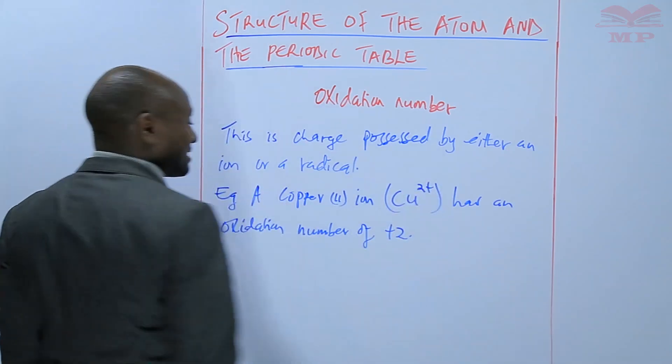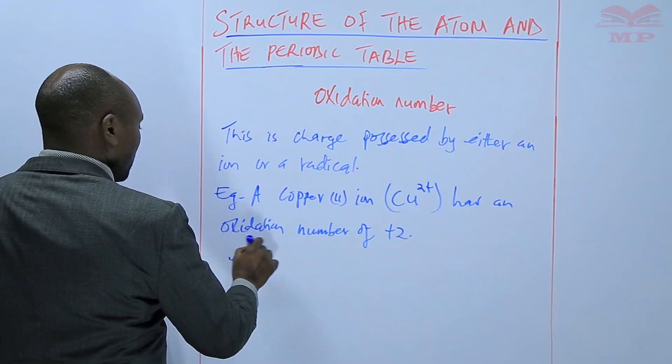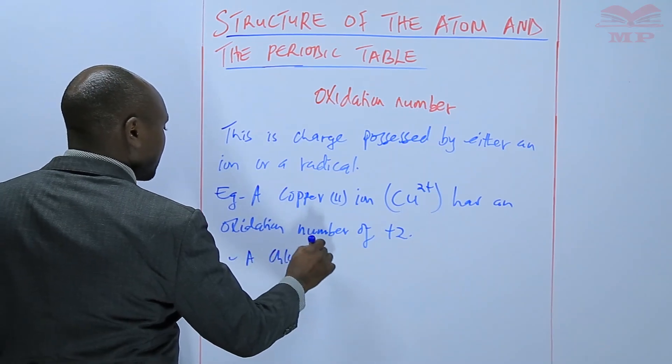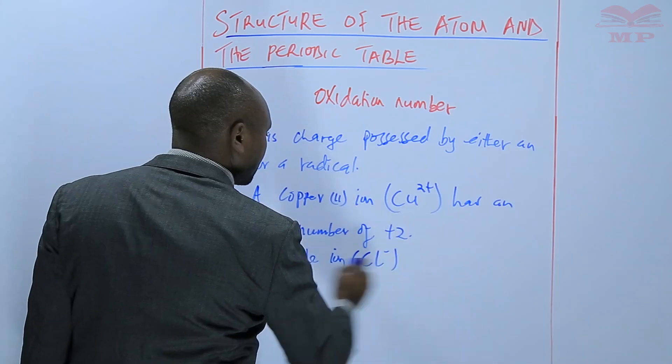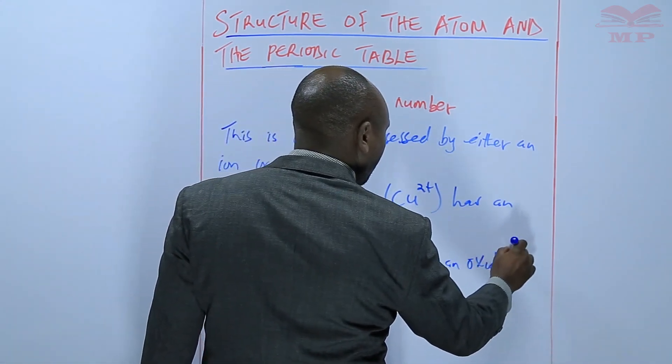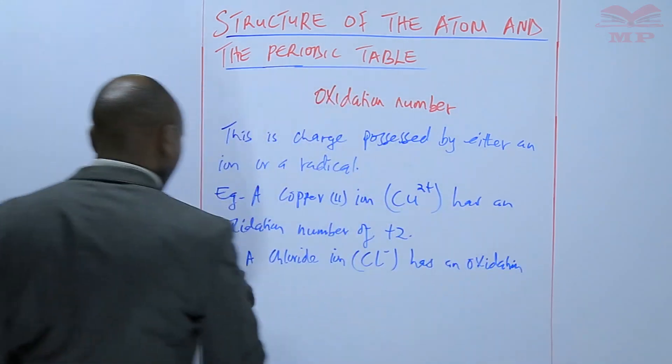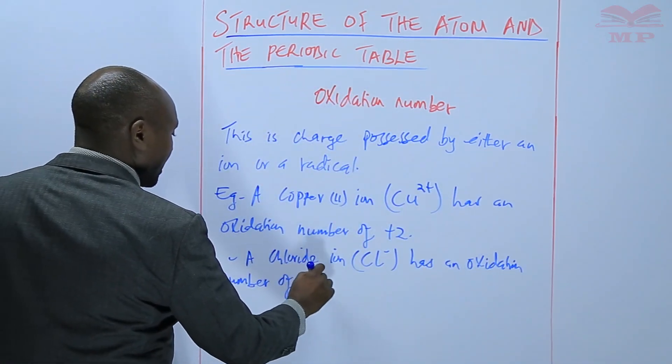So that is the charge that it carries. Another example, a chloride ion, Cl-, has an oxidation number of negative 1.